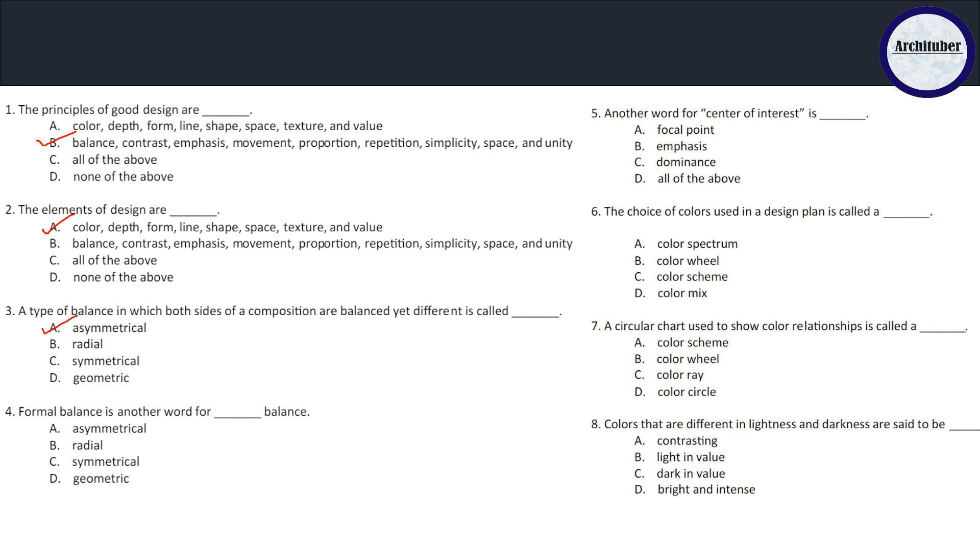Fourth question: formal balance is another word for symmetrical balance. Another word for center of interest is focal point. The choice of colors used in a design plan is called a color scheme. A circular chart used to show color relationships is known as a color wheel.